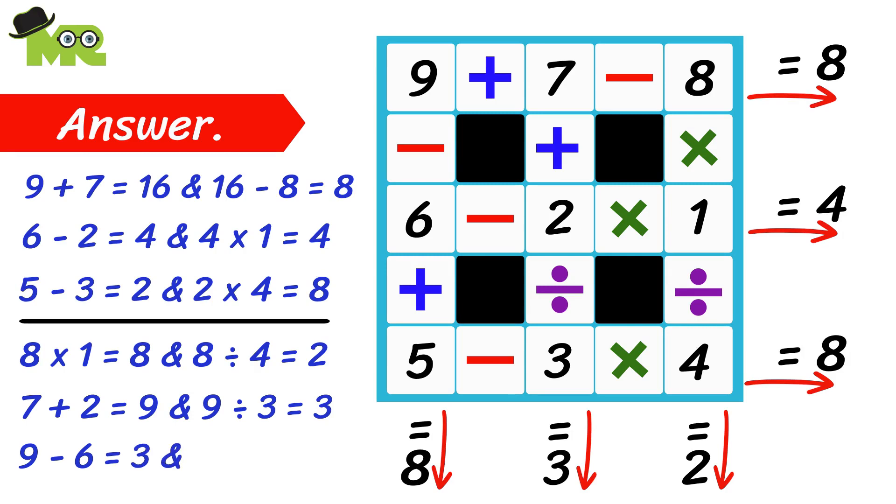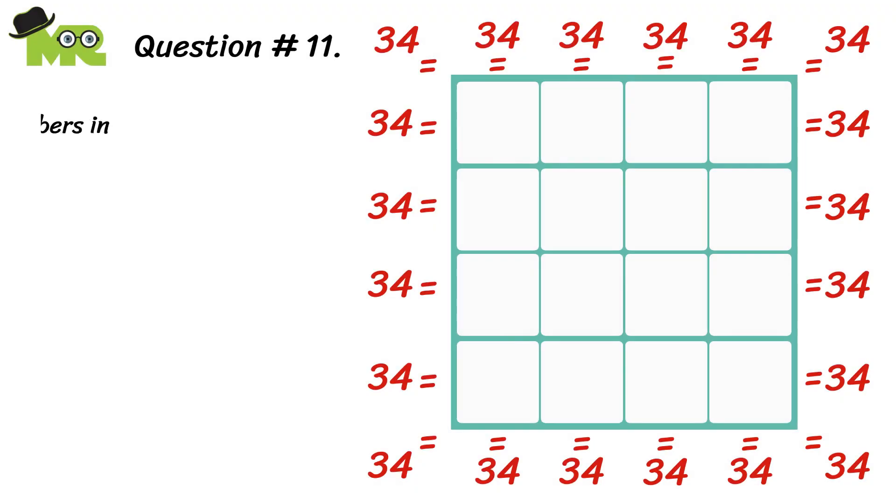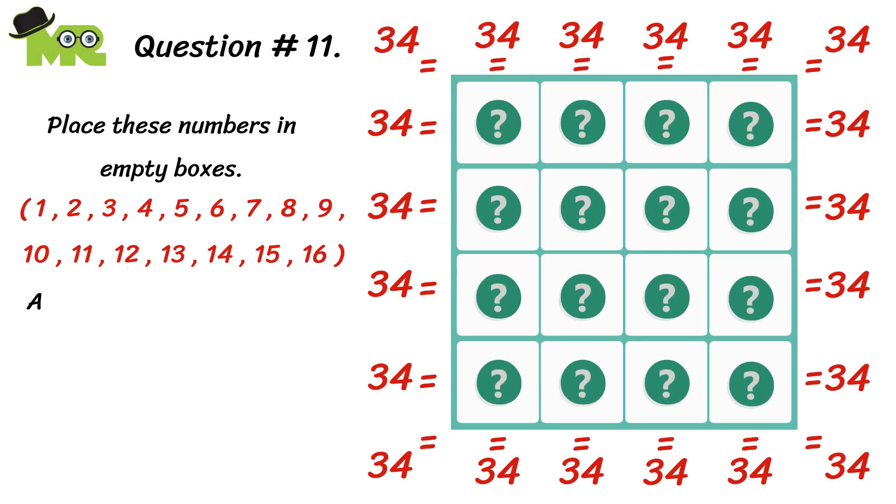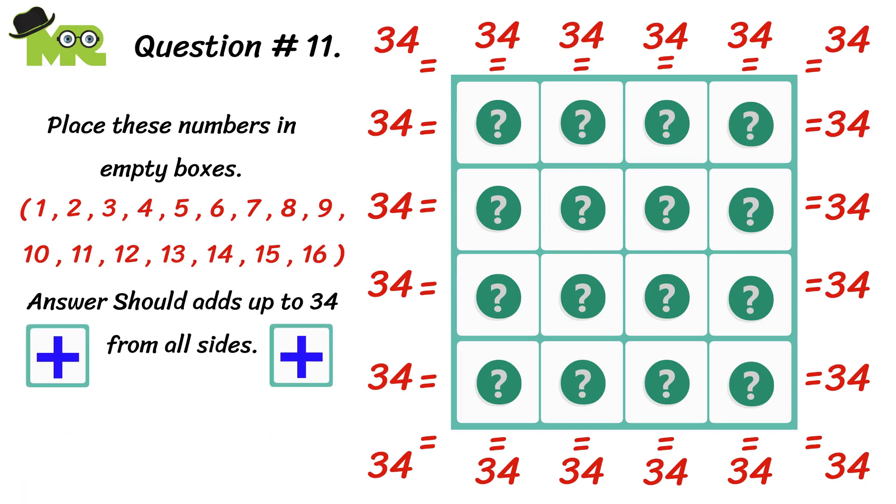Let's complete this. 9 minus 6 is 3 and 3 plus 5 equals 8. Let's go to question 11. Can you place a number from 1 to 16 in these empty boxes in a way that the answer adds up to 34 from all sides?